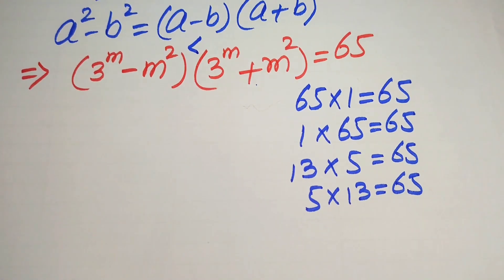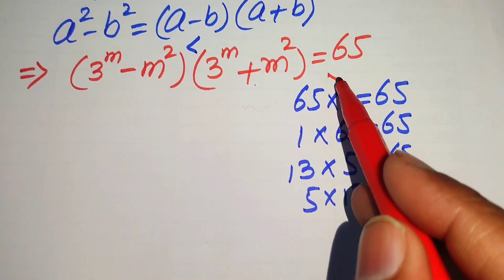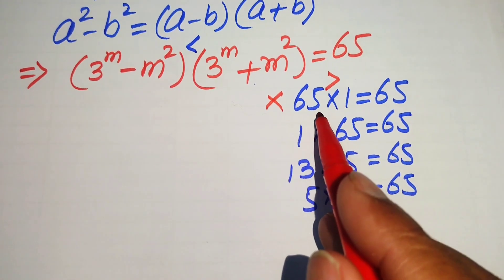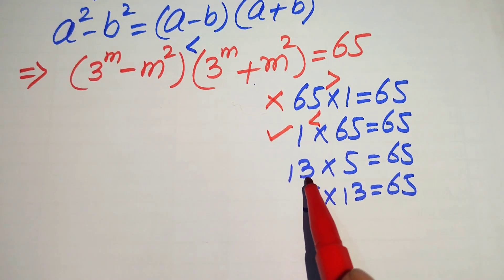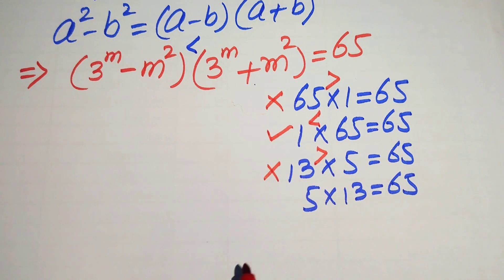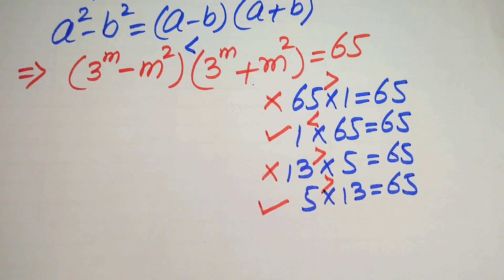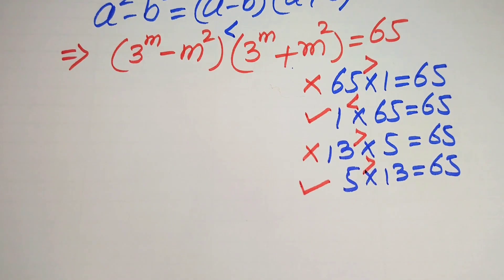We choose pairs where the first number is less than the second number. So 65 times 1 is rejected (65 > 1), but 1 times 65 is accepted (1 < 65). Similarly, 13 times 5 is rejected, and 5 times 13 is accepted (5 < 13). We proceed with these two valid cases.